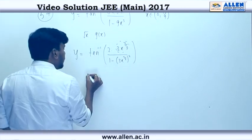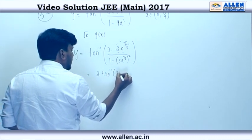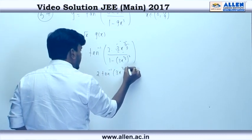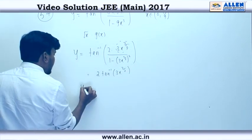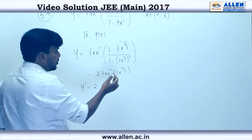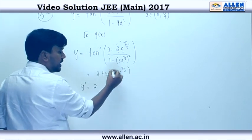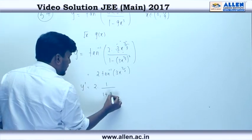So clearly, we can write y dash 2 times tan inverse t, t means 3x power 3 by 2. Now we can write y dash 2 times tan inverse t means 1 upon 1 plus t square, t square means 9x cube.